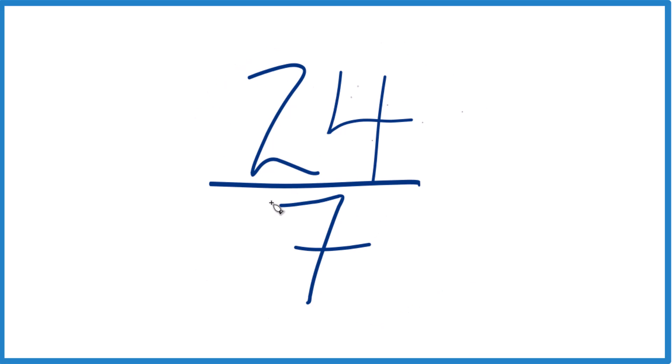So to simplify or reduce 24 7ths down to lowest terms, we need to find a common factor. That's something that goes into 24 and 7 evenly, a whole number that goes into 24 and 7 evenly.